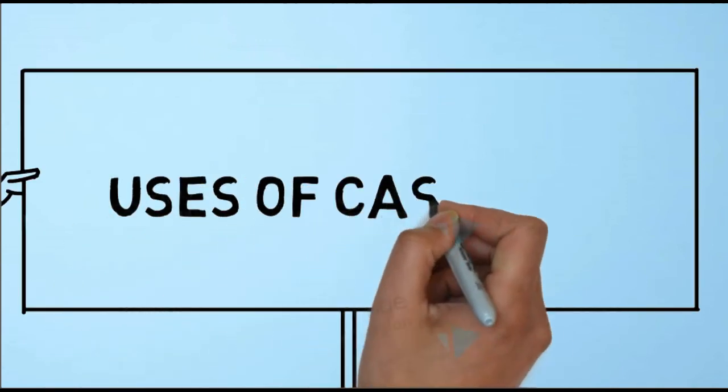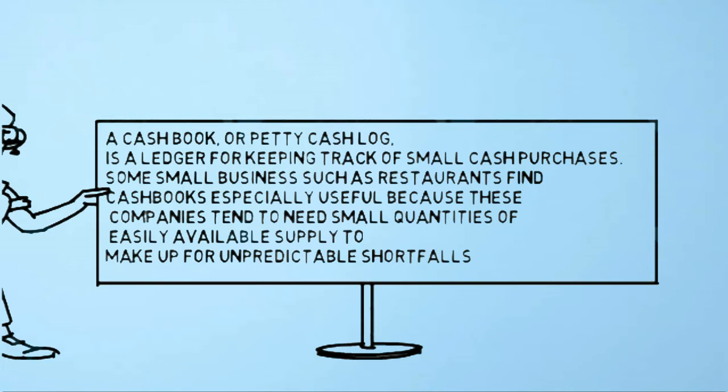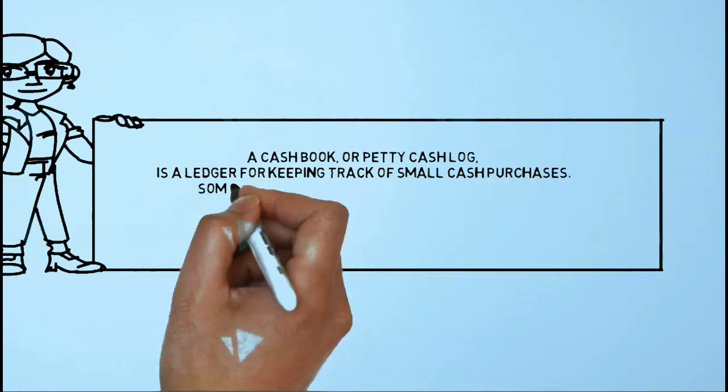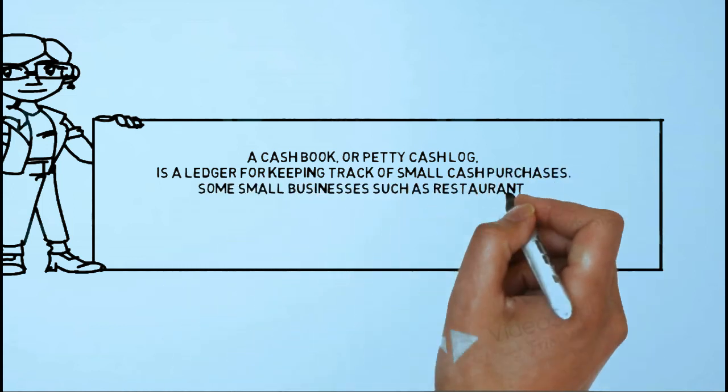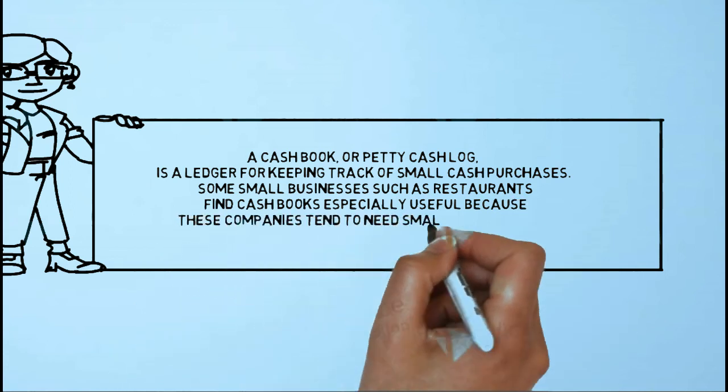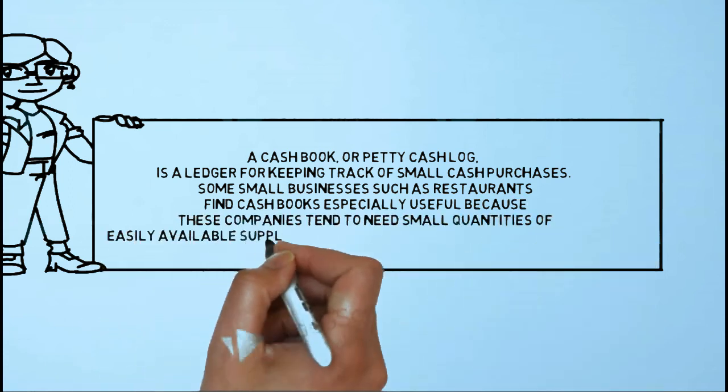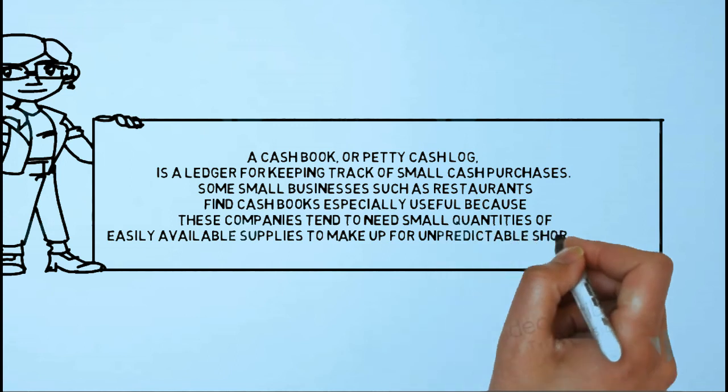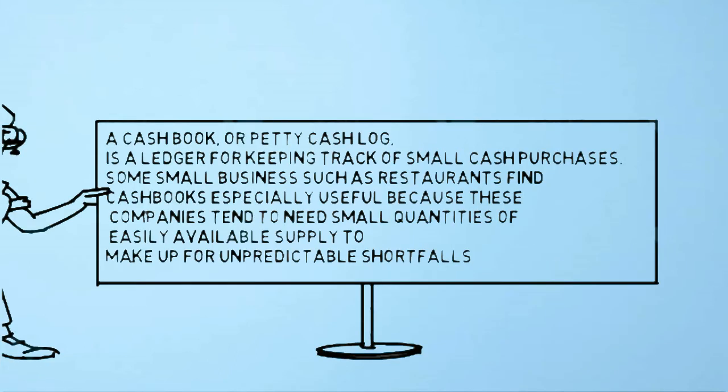Let's see the uses of cash book. A cash book or petty cash log is a ledger for keeping track of small cash purchases. Some small businesses, such as restaurants, find cash books especially useful because these companies tend to need small quantities of easily available supplies to make up for unpredictable shortfalls.